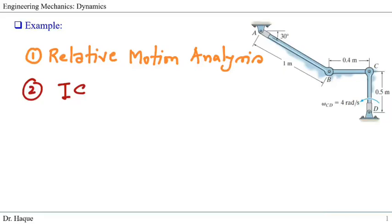The learning objective of this webcast is to solve the general plane motion problem of a rigid body in two different ways: first using relative motion analysis, and second using the instantaneous center of zero velocity approach.